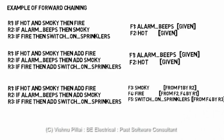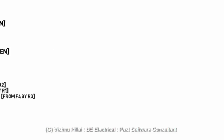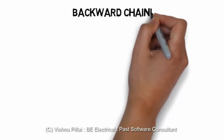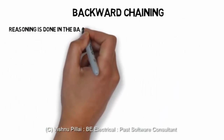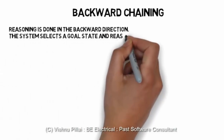The program can conclude that fact F3 — it is smoky — from F1 (there is an alarm) and rule R2 (if alarm beeped then it is smoky). Based on F2, F4, and R1 it can conclude there has been a fire, and based on this the program concludes it must switch on the sprinkler. In this way, the program works on the rules stored as knowledge in the rule base, generates facts, and reaches the goal state — switch on the sprinklers. Once the sprinkler is on, fire is extinguished, the system resets, facts in working memory are erased, and the process can begin again.